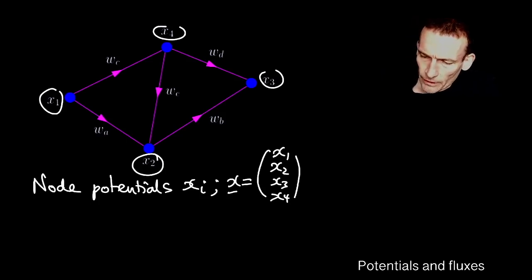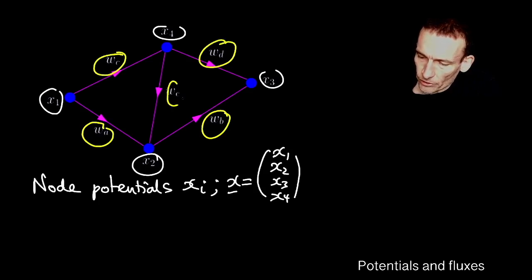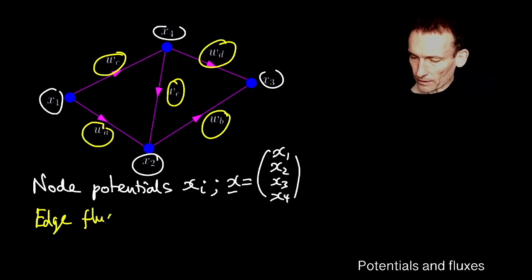You'll also see that I have assigned values to the edges, too, and I'm going to call those edge fluxes. It's my choice of word there. Potentials and fluxes. The fluxes on the edges. And we'll call those wi again. i is just an index.